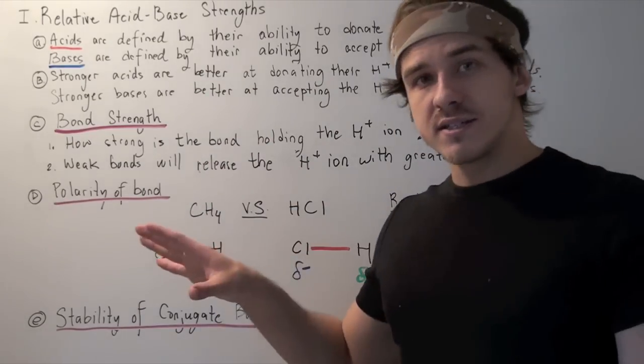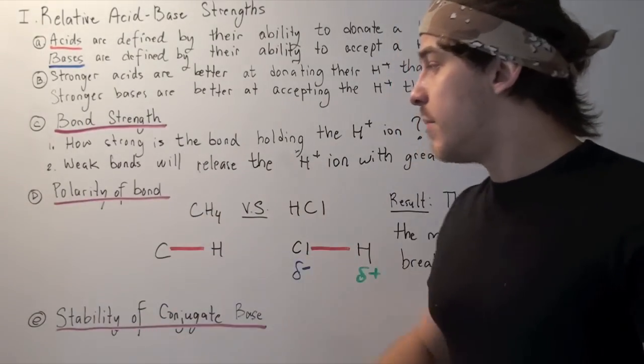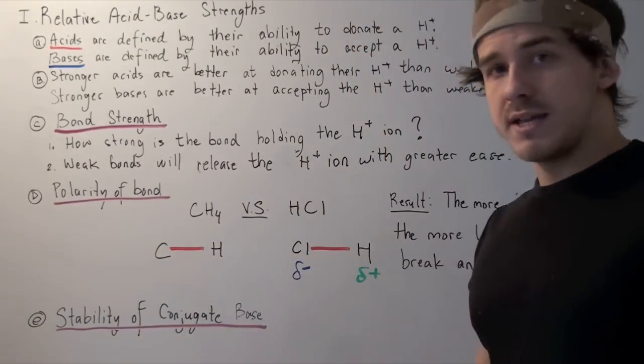Three things make up a good acid: bond strength, polarity of bond, and stability of conjugate base.